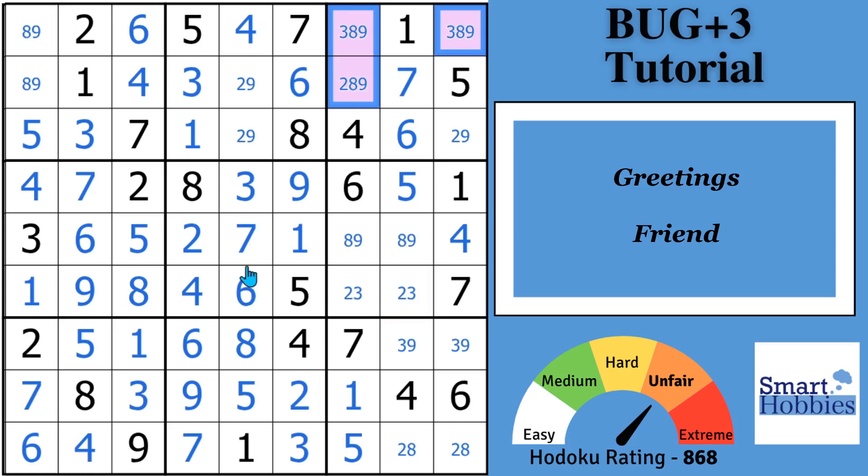Greetings, friend. I'll teach you everything you need to know about the advanced Sudoku technique called Bivalue Universal Grave Plus 3, also known as BUG+3. I'll cover all the relevant definitions and conditions, what makes this different from the BUG+1 that you've probably heard of before, and most importantly, a key fact you need to know before you try to apply this technique. Click below for the puzzle link, and with that, it's solving time.